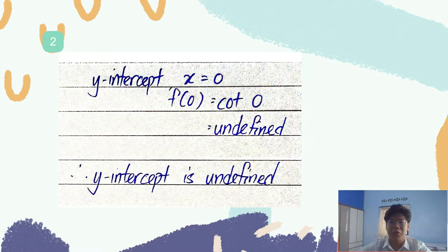To get the y-intercept, x is replaced by 0 and the function becomes cot(0). Since cot(0) is undefined, the function has no y-intercept.